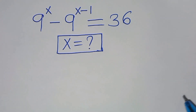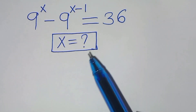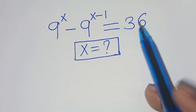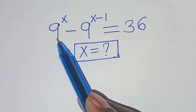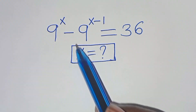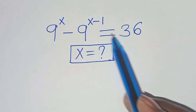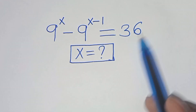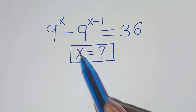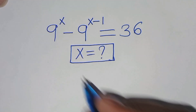Hello everyone, you are welcome to solve this nice exponential problem, which is 9 to the power x minus 9 to the power x minus 1. This is equal to 36. What is the value of x?